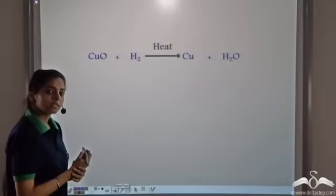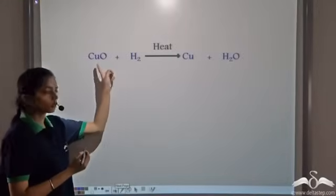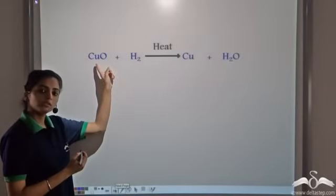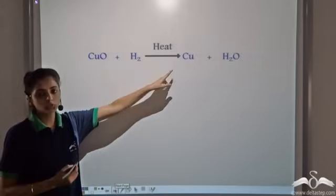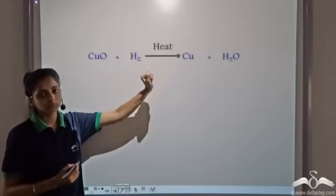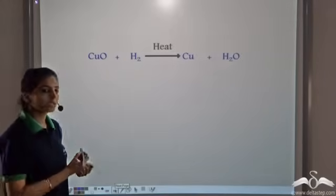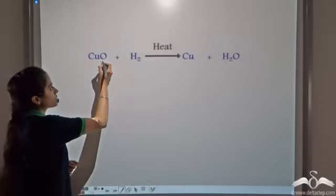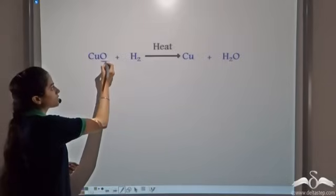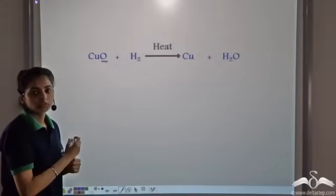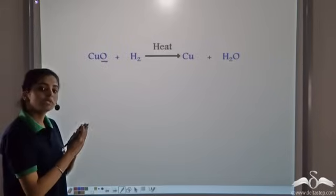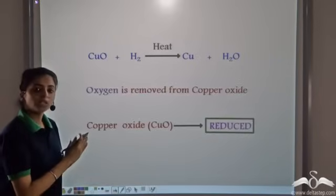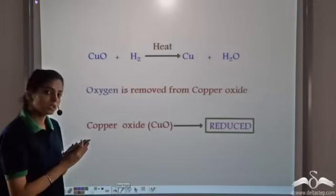Now in this case, we have copper oxide. When it reacts with hydrogen, it forms copper and water. Oxygen is being removed, and so whenever oxygen is being removed, that reaction is known as a reduction reaction.